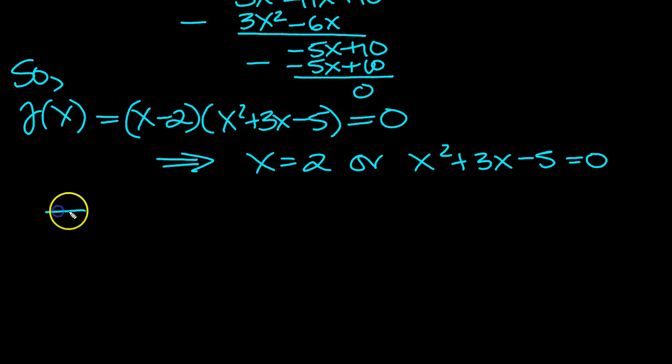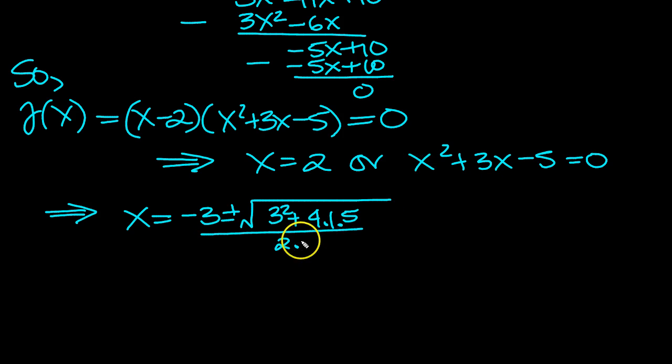So we have to use the formula. So x equals minus b plus or minus the square root of b squared is 3 squared minus 4 times a, which is 1, times c, which is minus 5, so I'll take that to a plus, all over 2 lots of a, which is 1. So we end up with minus 3 plus or minus, 9 plus 20 is root 29, over 2.